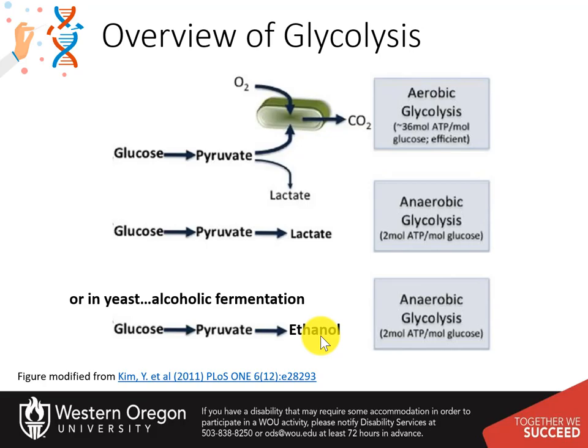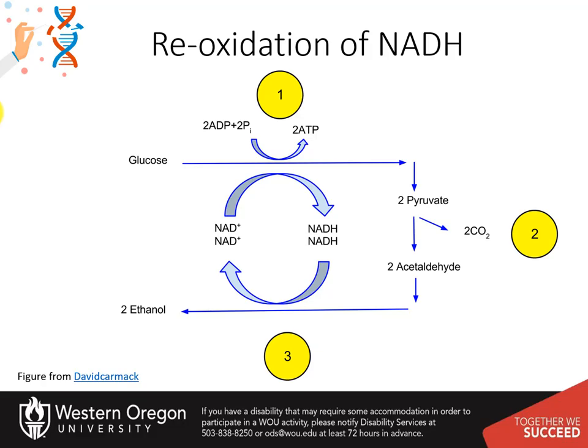As in the process of converting pyruvate into lactate, the purpose of ethanol fermentation is the oxidation of NADH to NAD+, to renew this electron carrier for use in the glycolytic pathway. In ethanol fermentation, step one: one glucose molecule breaks down into two pyruvates. The energy from this exothermic reaction is used to create two ATP and two NADH.